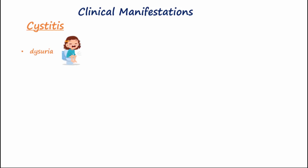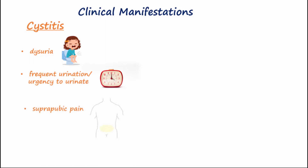Typical symptoms with acute cystitis include dysuria, urinary frequency and urgency, suprapubic pain, and hematuria.